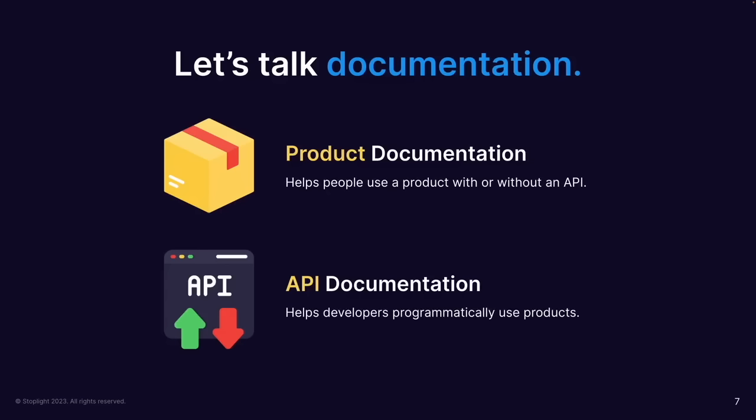There are two high-level buckets when we talk about documentation: documenting your product, and documenting APIs. Product documentation shows someone how to use a product — often a point-and-click experience. API documentation is more developer-centric; it's about how to write code to use something. We're going to focus on that developer-centric documentation.